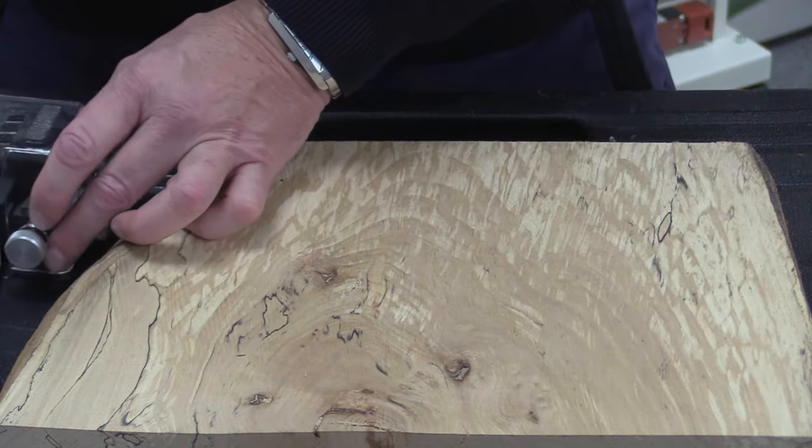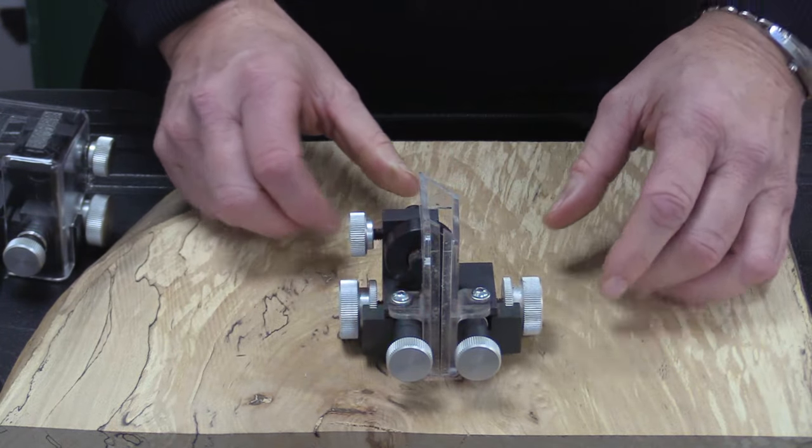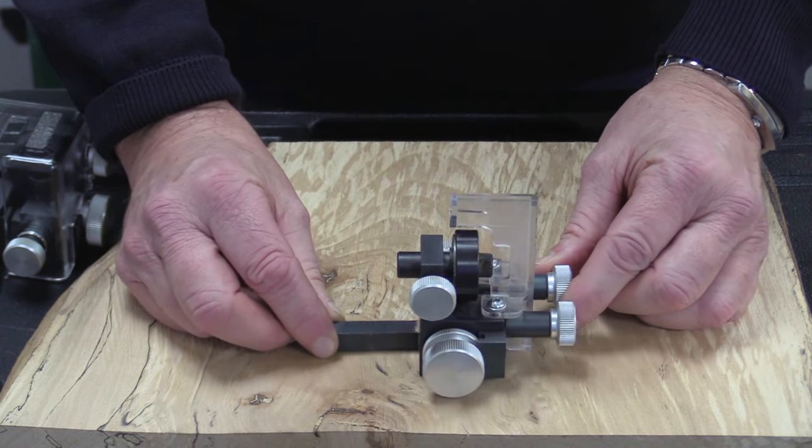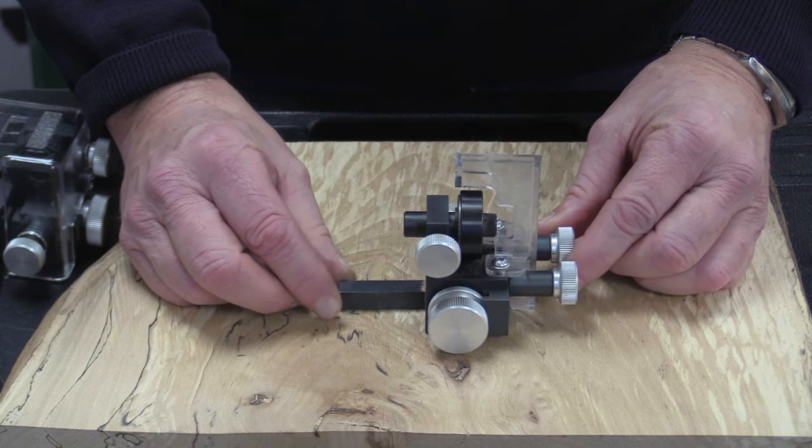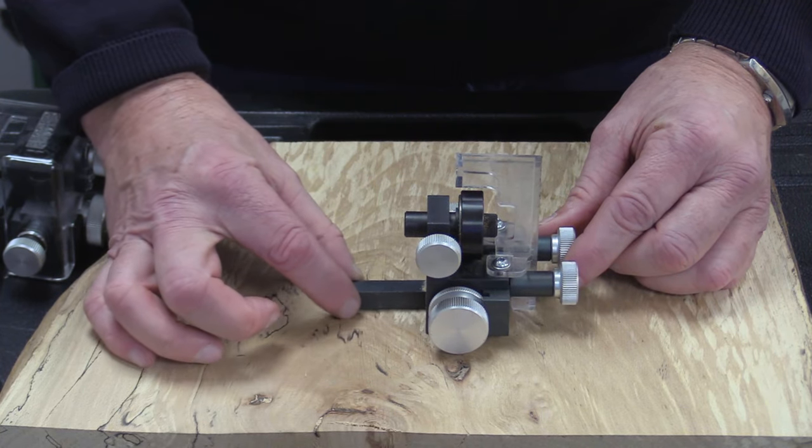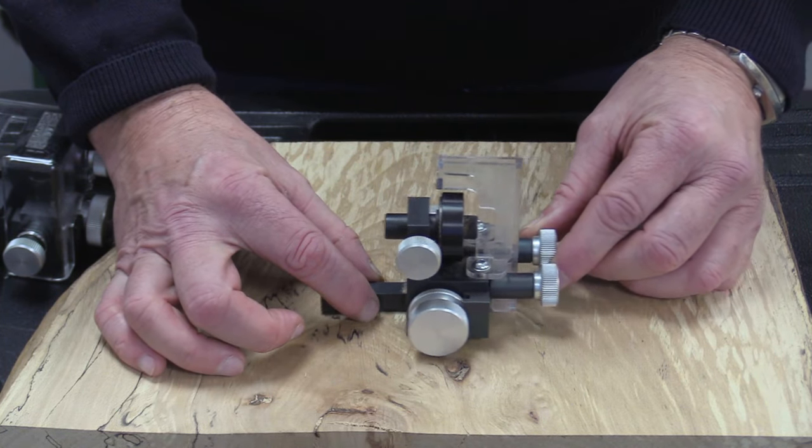So we move that out of the way and we bring the lower block in. Very similar in design and features when we're doing that. What we've got is a square bar on there now that again allows you to take it forward and back before locking in position.